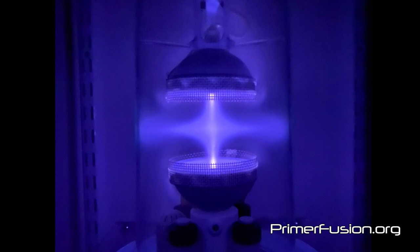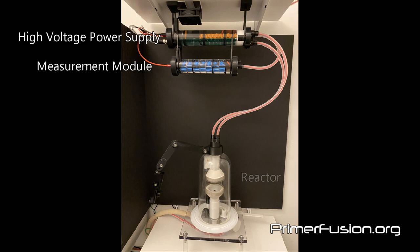Here we see one of the experimental primerfusion reactors, the power supply, and the measurement module for the upper magnetic array. This image does not show the second power supply and measurement module that provides power to the lower magnetic array.